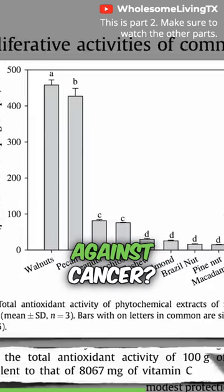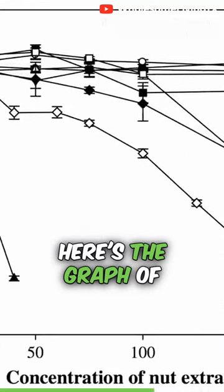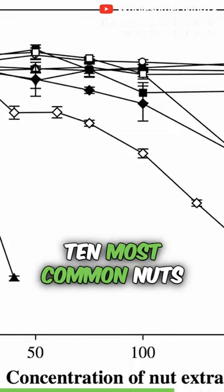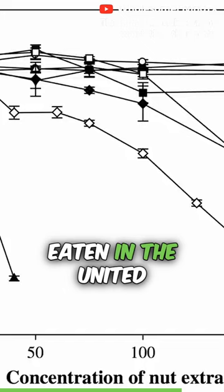But how do they do against cancer? Here's the graph of human cancer cell proliferation versus increasing concentrations of the 10 most common nuts eaten in the United States.